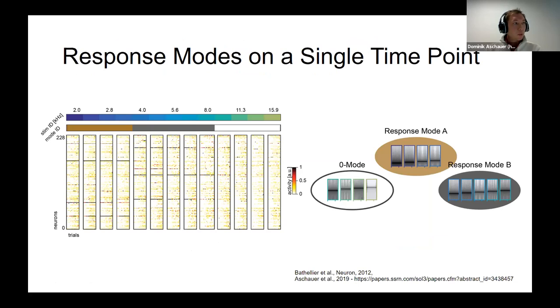On a single time point, we observe that neuronal populations elicit a discrete set of activity patterns in response to sounds, where multiple stimuli are being grouped together and drive a highly similar response pattern, which we term response mode. As in this example, this behavior can be even seen in response to gradually changing stimuli, such as neighboring pure tone frequencies, where there's an abrupt transition from one response mode to the other. And if there is no response elicited, this we would then term a null mode.